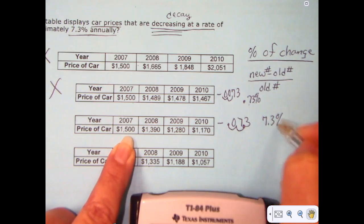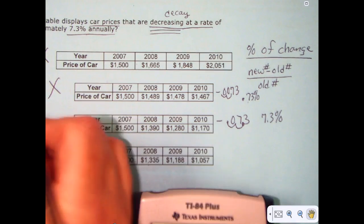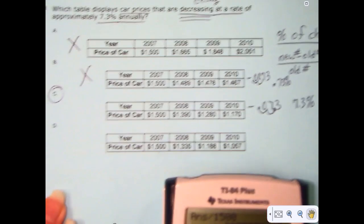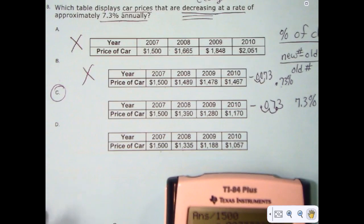To change that to a percent, move that decimal back, and now I do have the 7.3 percent that I'm looking for. I can choose C pretty confidently. I really don't need to check D unless I've got all the time in the world, so we're not going to do that in this video, and that's all I have to say about that. Thank you.